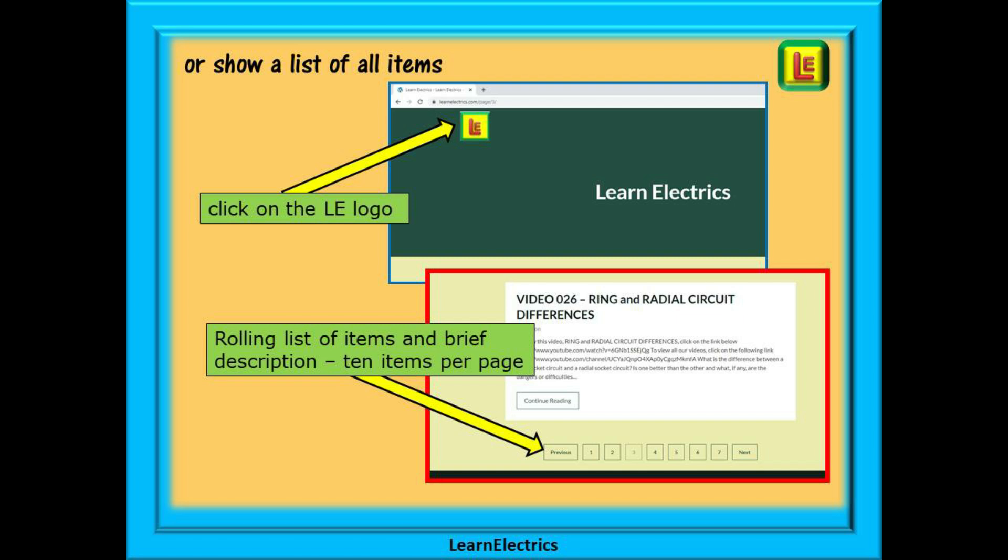Or you can browse through a list of all the available items and videos. To do this, click on the LE logo on the top left of the homepage, and all our items and videos will be shown. There will be 10 items shown on each page, and at the bottom of each page is a page selector. Page 2, page 3, 4, and so on, that will bring up the next 10 items or videos in the list.